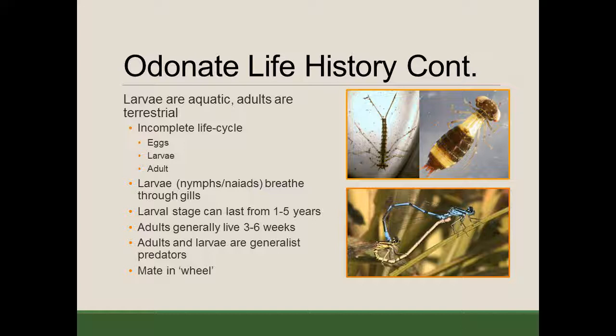Both the adults and larvae are considered generalist predators, meaning they will eat anything they can catch. For the larvae, that's many different aquatic insects, and for some larger species of dragonfly larvae in particular, they can eat tadpoles and even small fish like minnows. Adults are also generalist predators — generally they'll catch any flying insect they're able to, and that even includes other damselfly and dragonfly species.